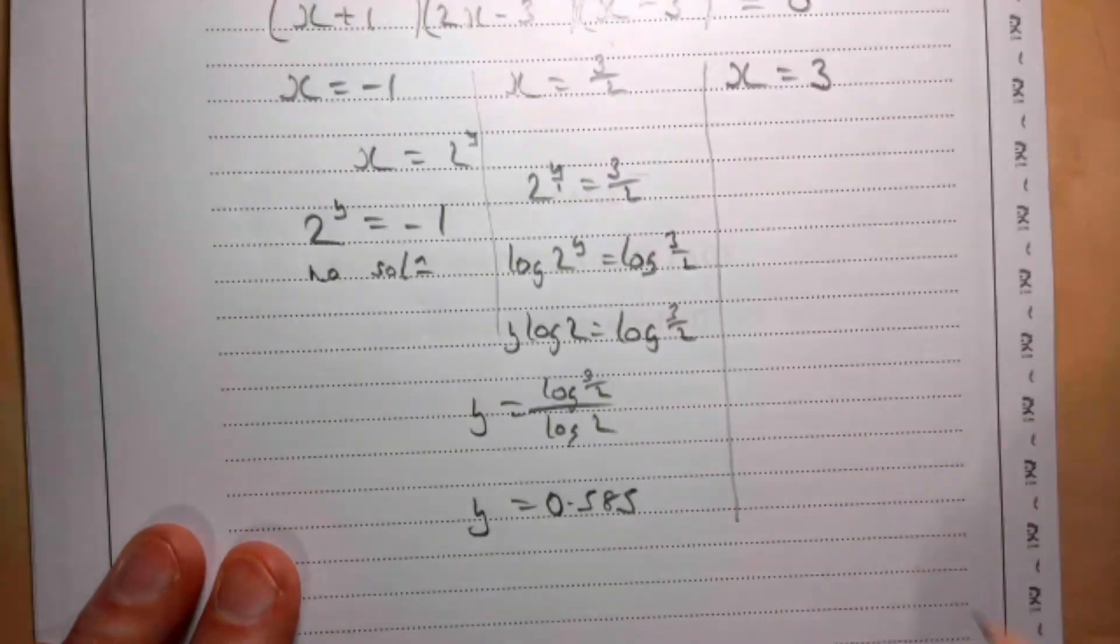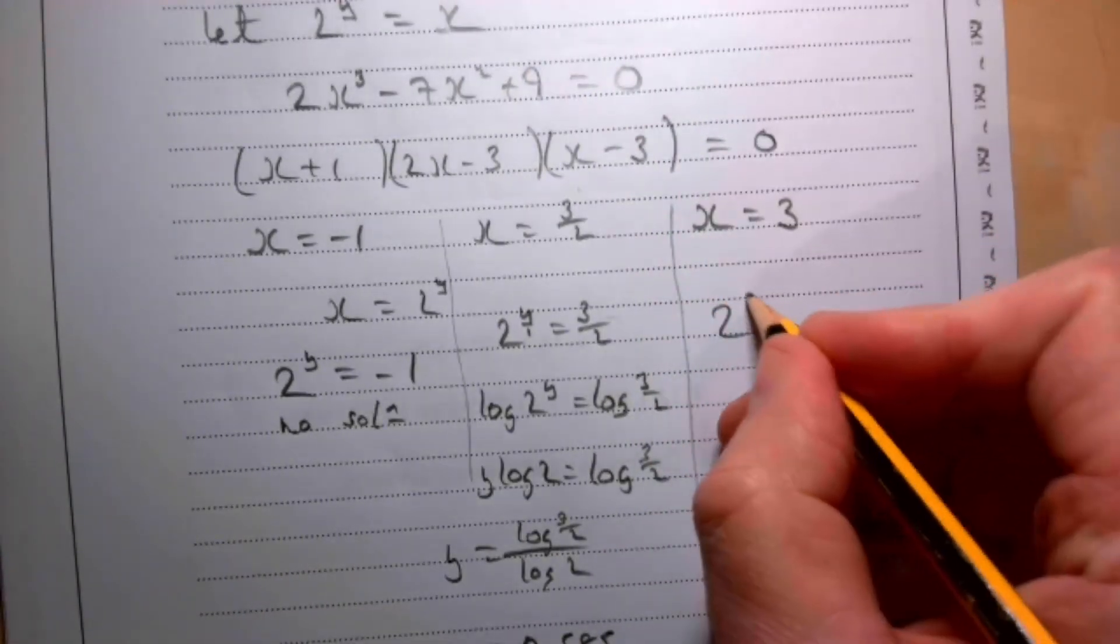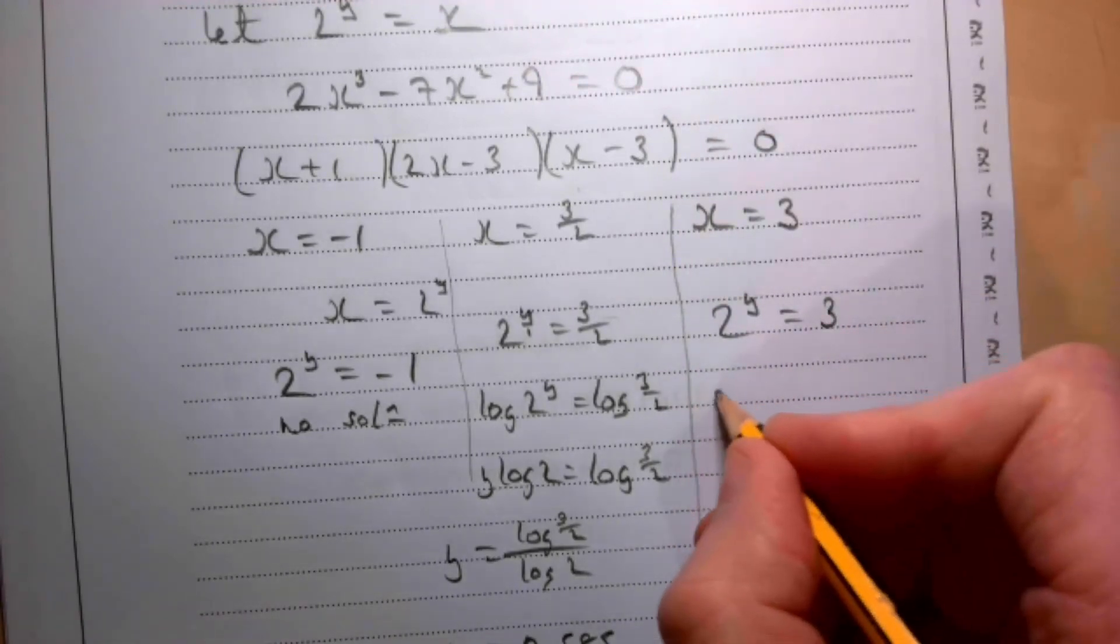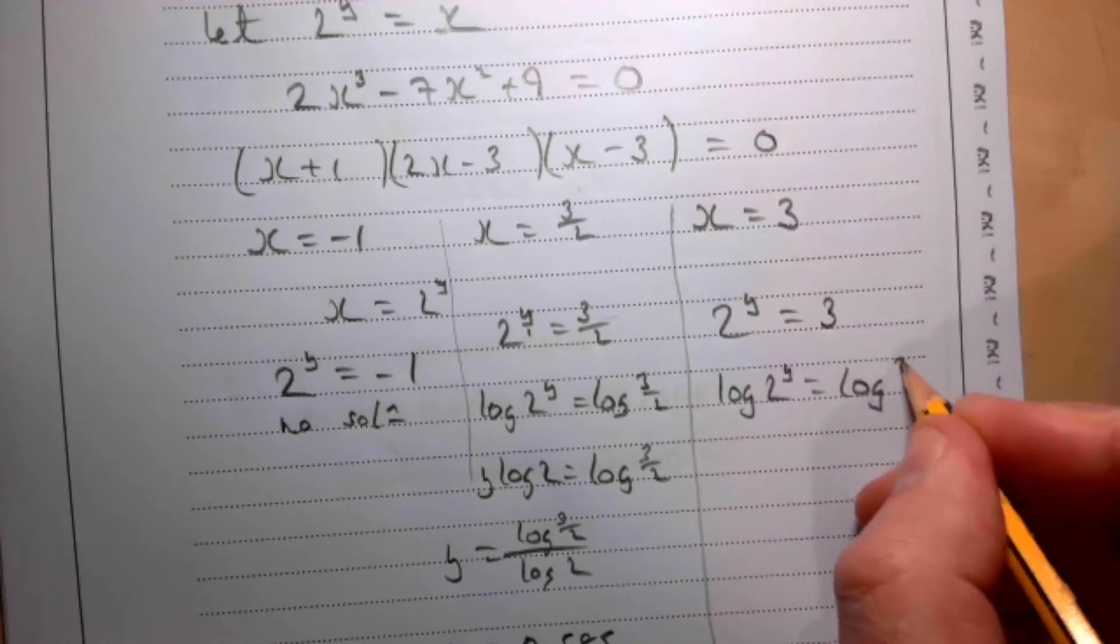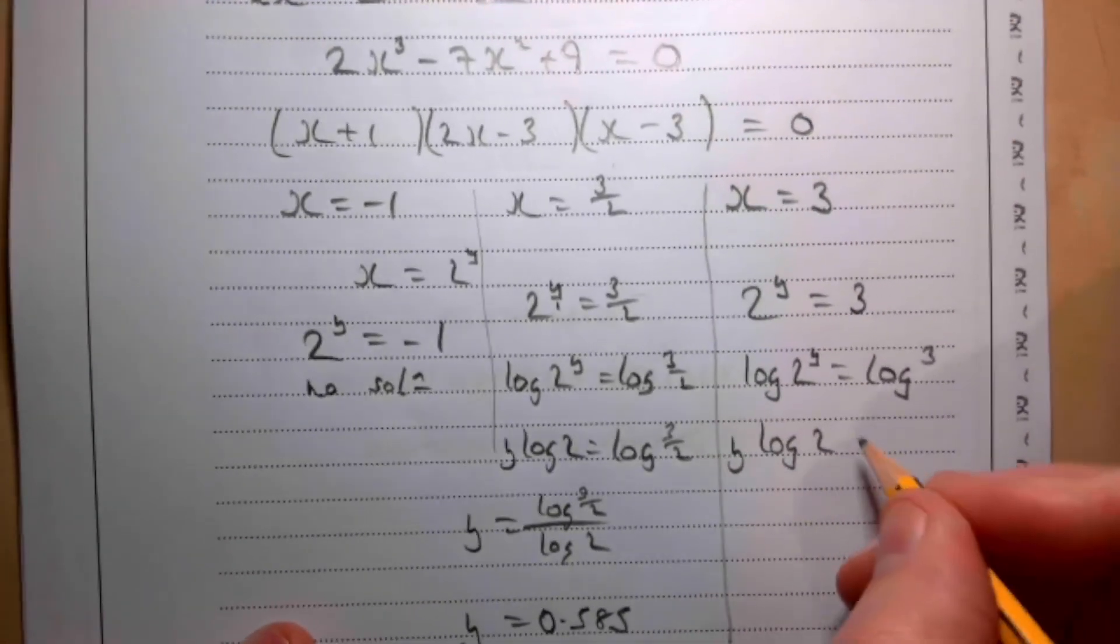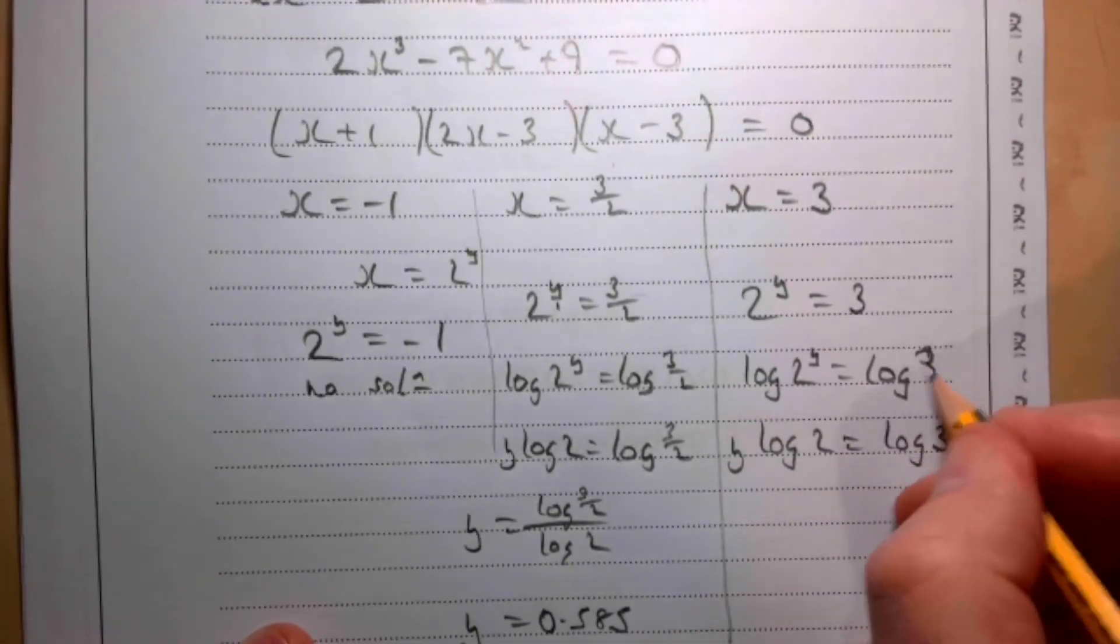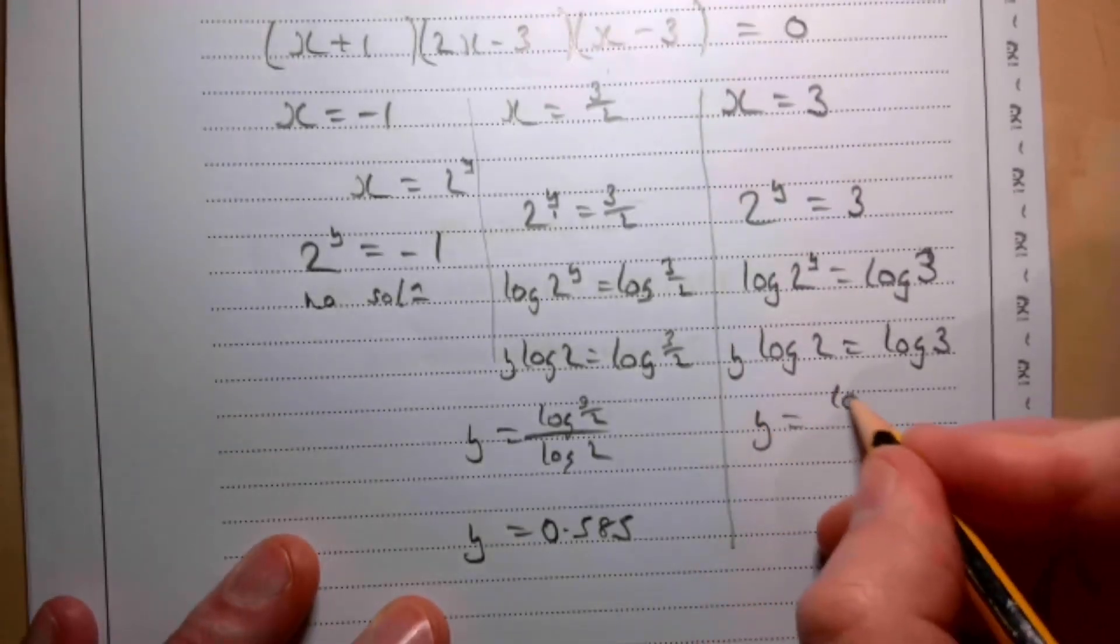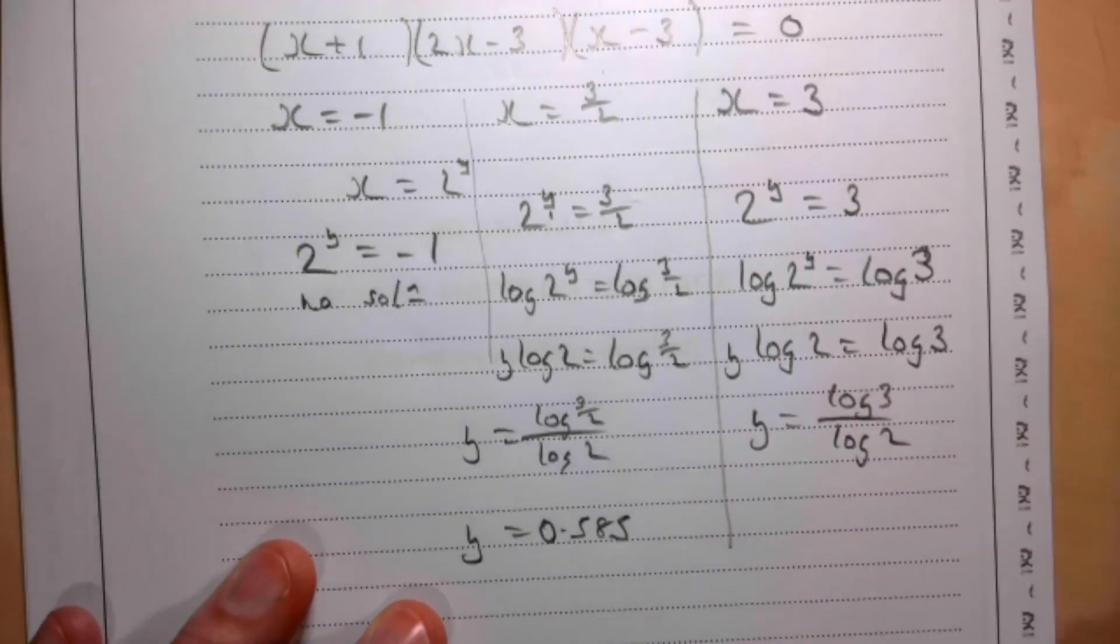My final one, 2^y is 3. Again, logs of both sides. So we have log(2^y) is log(3). y·log(2) is log(3). So y is log(3) over log(2).